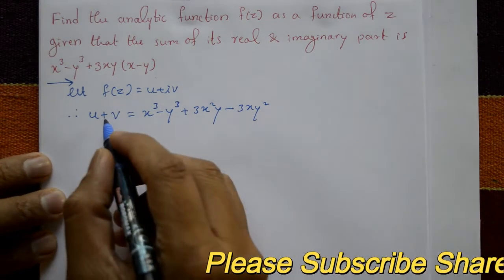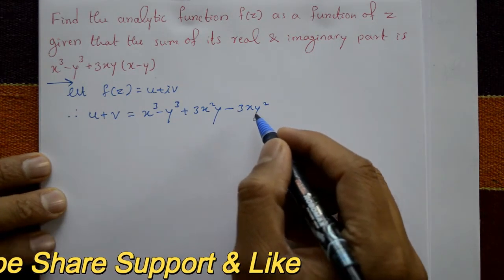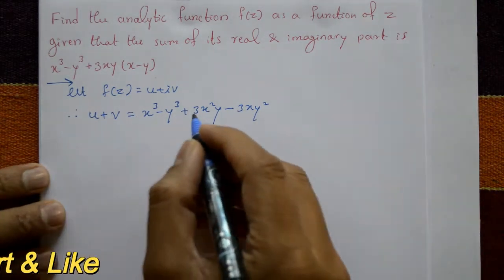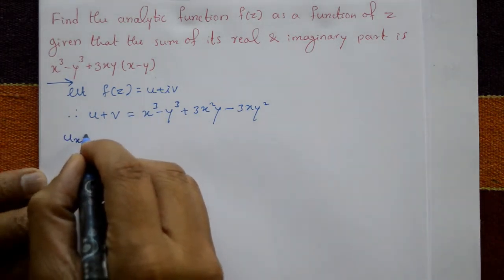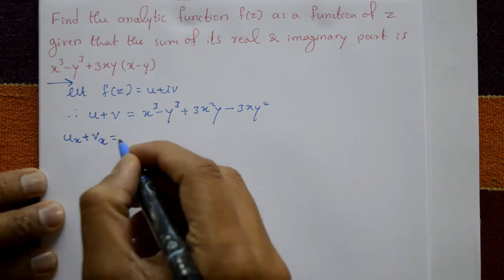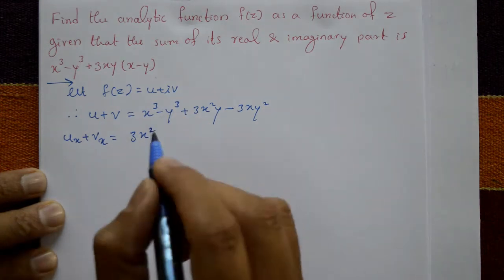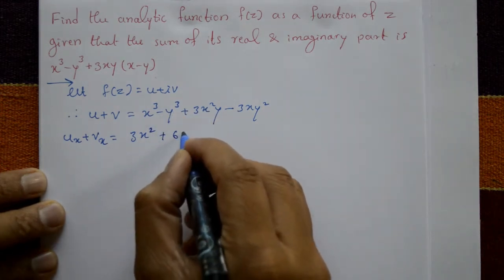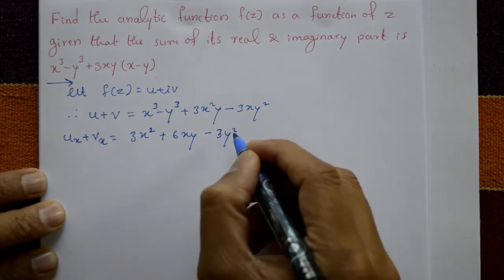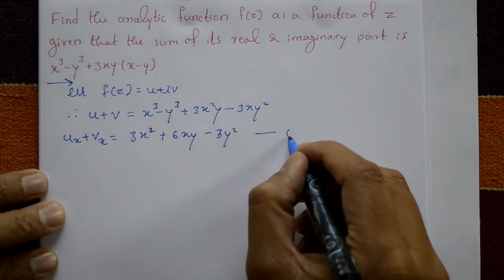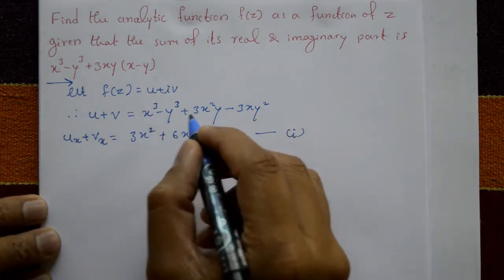Now differentiate u + v with respect to x, treating y as a constant. So ∂u/∂x + ∂v/∂x equals 3x² + 6xy - 3y². This is equation number one.